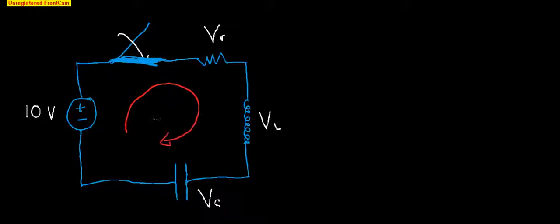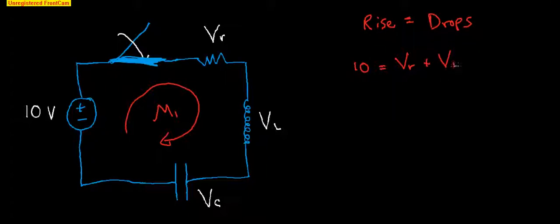We're going to go around our mesh. This is M1. And all the rises should equal all of the drops. So a battery, that is something that supplies energy, so that is definitely a rise. So 10 volts goes on the rise side. And then everything else is just a drop. Resistor, inductor, and capacitor. They all absorb energy. So that is supposed to equal the voltage of the resistor plus the voltage of the inductor plus the voltage of the capacitor. Nothing crazy. This is just the same thing as 210.